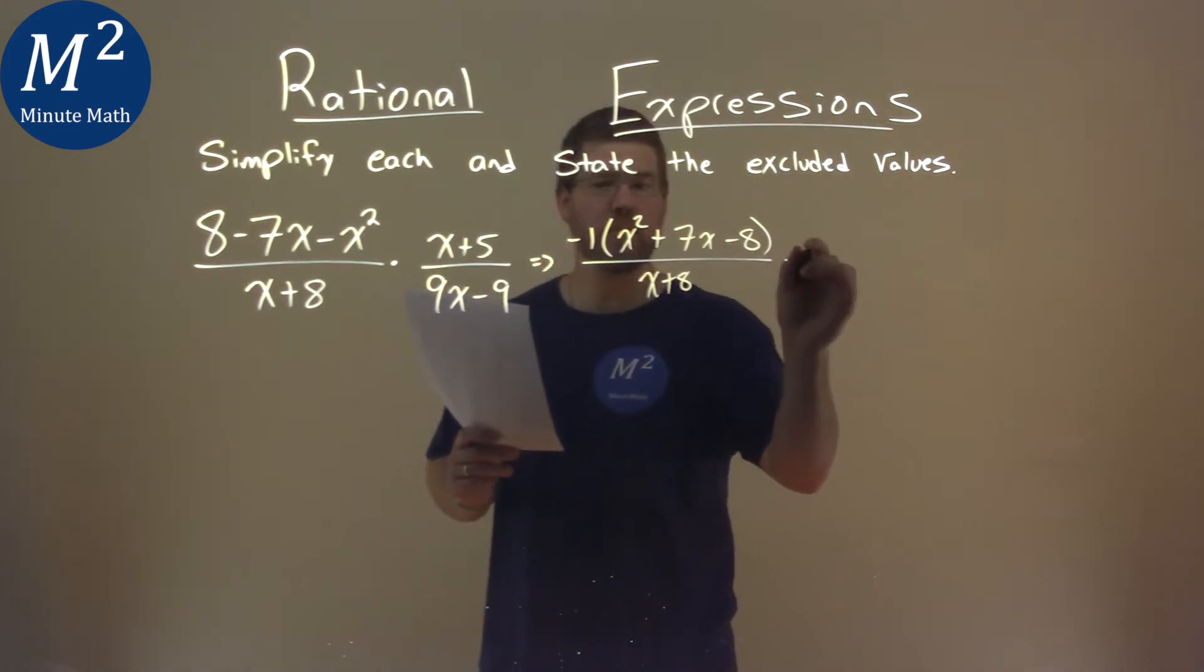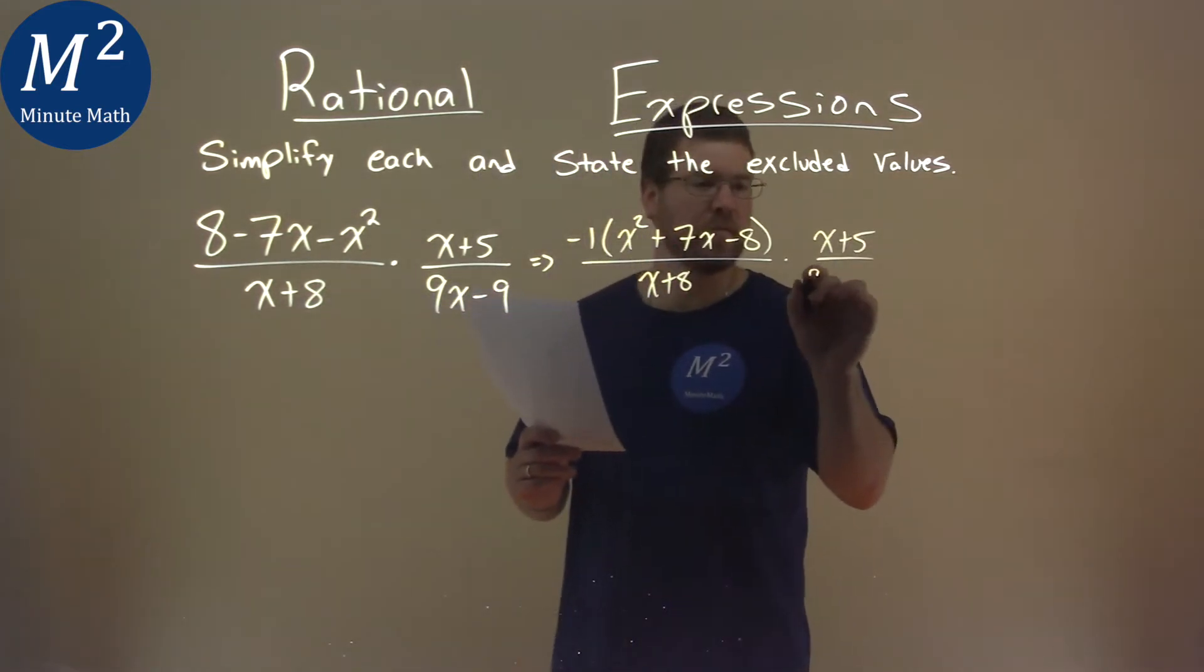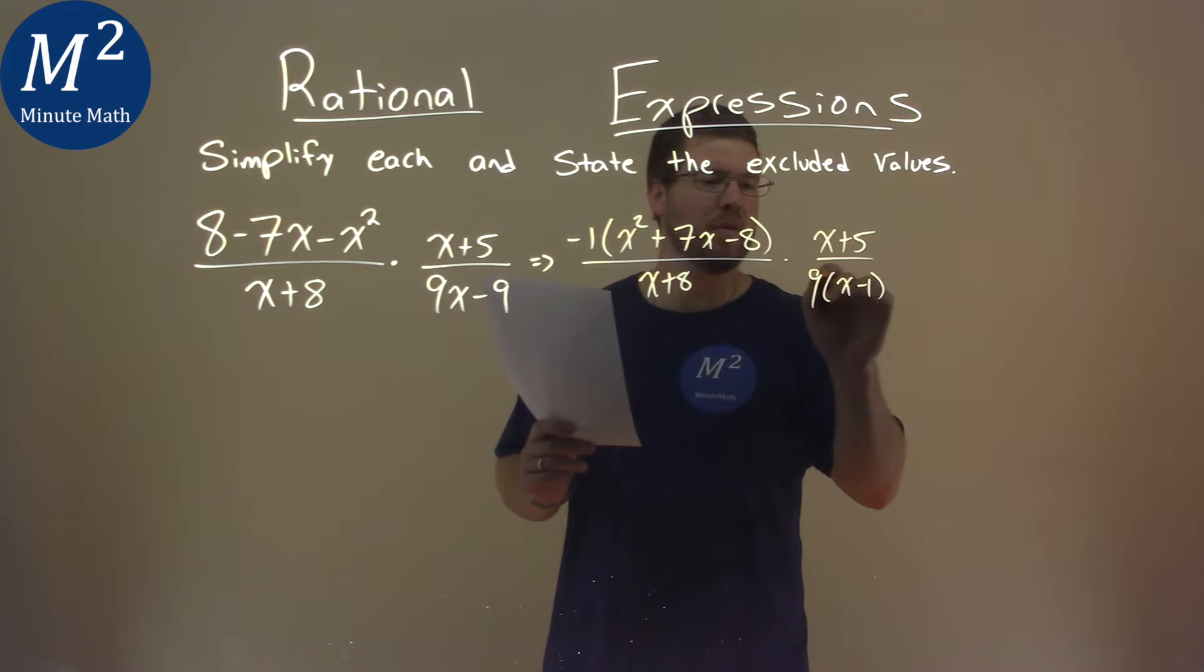And this is being multiplied by an x plus 5, and this denominator, let's go pull out the 9. So we have a 9 times an x minus 1.